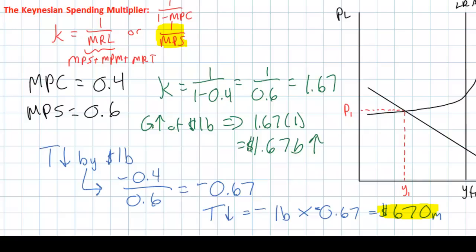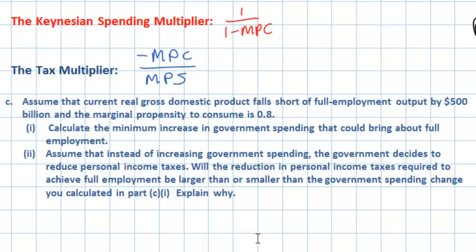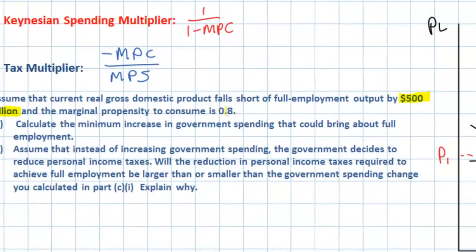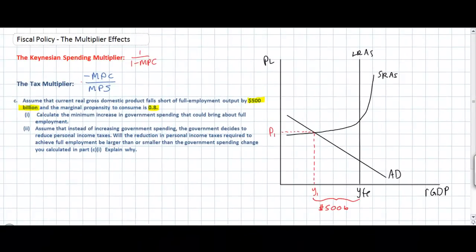A tax cut increases household disposable income, but some of that increase goes towards savings and a smaller proportion towards consumption, leading to less aggregate demand. Next we'll look at an actual AP economics exam question applying both the government spending multiplier and the tax multiplier. The question states: assume that current real GDP falls short of full employment output by 500 billion dollars and the marginal propensity to consume is 0.8. Let's illustrate this 500 billion dollar recessionary gap on our graph and determine what the government spending multiplier would be.